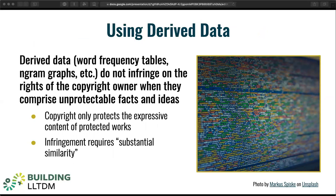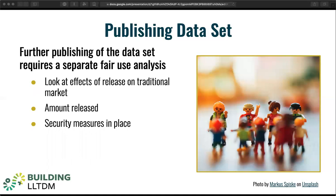The cases tell us that derived data does not infringe on the rights of the copyright owner when it's comprised of unprotectable facts and ideas. Copyright in a work does not include a monopoly over facts about that work — facts belong to everyone and are free to share. Publishing the data set, however, requires a separate fair use analysis. Look at the effects of data publication on the traditional market for the works in the data set. It's especially important to consider the amount you're going to release publicly and the security measures in place to prevent the kinds of access that could create cognizable harm to the market for that work.